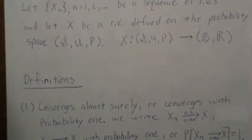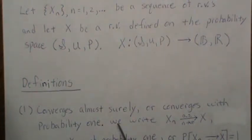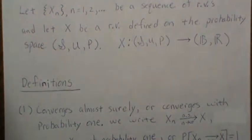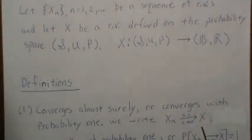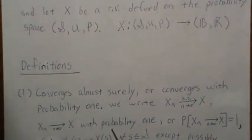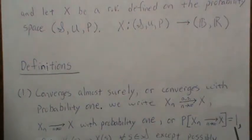The first two — convergence almost surely and convergence with probability one — are the same thing. There are really three ways to write it: we can say X_n converges almost surely to X, we can say X_n converges to X with probability one, or in probability notation: P(X_n converges to X) = 1.